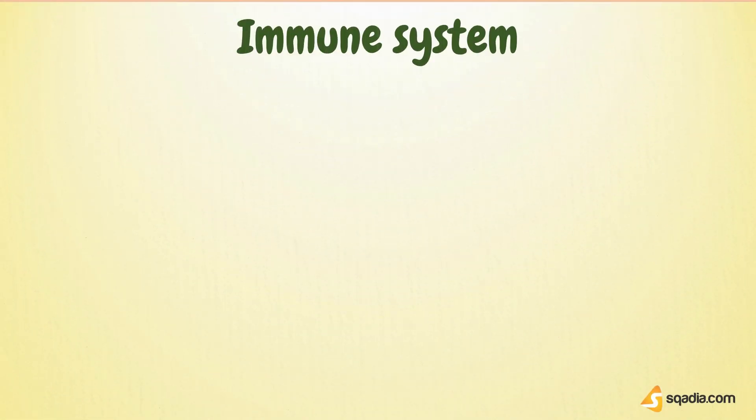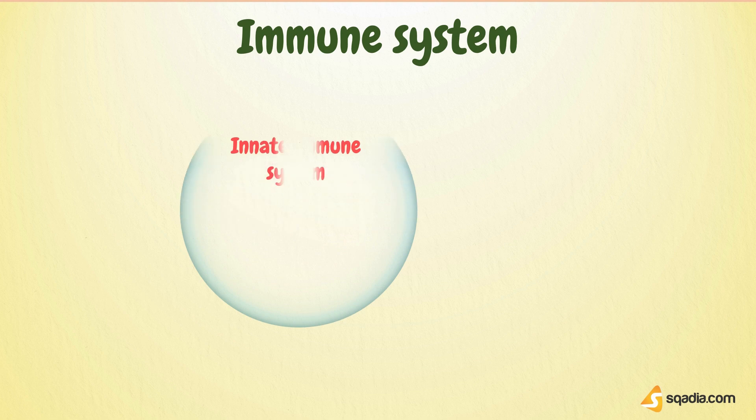Let's briefly revise our concept of the immune system. We know very well that our immune system provides protection to our body against foreign microbes and other harmful substances, by either innate immunity — that is an inborn immunity present at the time of birth.